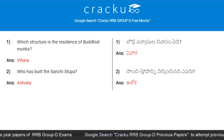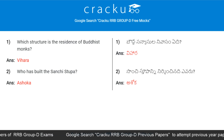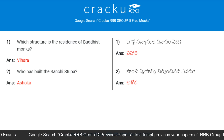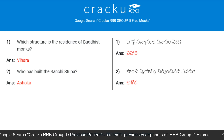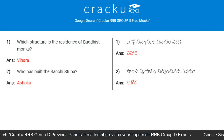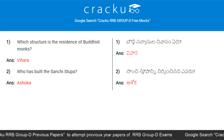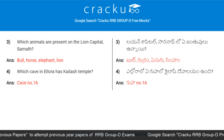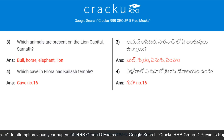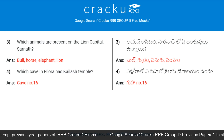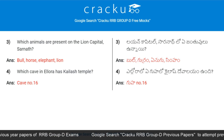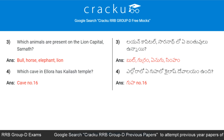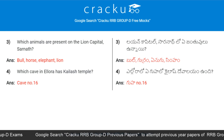Today's first question: Which structure is the residence of Buddhist monks? Answer: Vihara. Who built the Shanti Stupa? Answer: Ashoka. Which animals are present on the Lion Capital of Sarnath? Answer: Bull, Horse, Elephant, and Lion. Which cave in Ellora has the Kailash Temple?